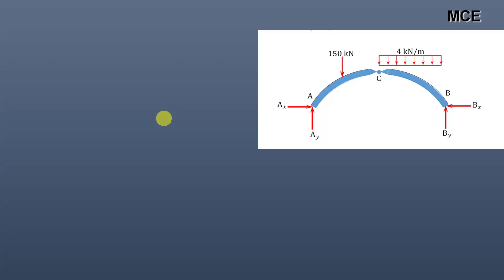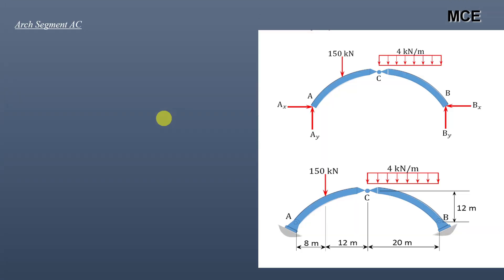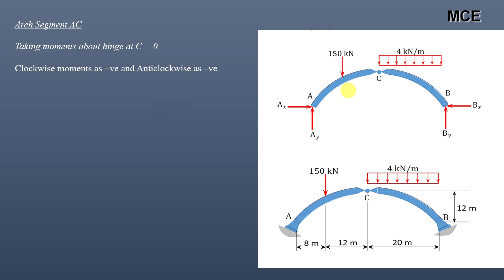Now we find the horizontal reactions. Take the moment about hinge C, considering only segment AC of the arch. Clockwise moments are positive and anti-clockwise moments are negative. The moment of Ax about C is anti-clockwise with a lever arm equal to the rise of 12 meters, so it is −Ax × 12. The moment of Ay about C is clockwise with a lever arm of 8 + 12 = 20 meters.